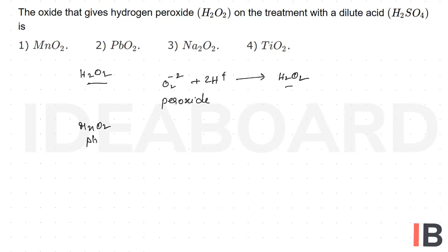Of the given options, if we observe MnO2, PbO2, and TiO2, all these three are normal oxides because these elements are having the maximum oxidation state of plus 4.